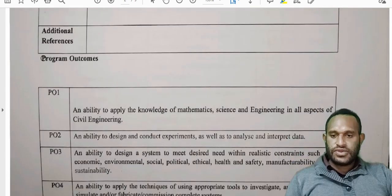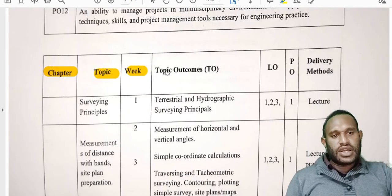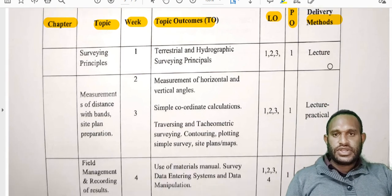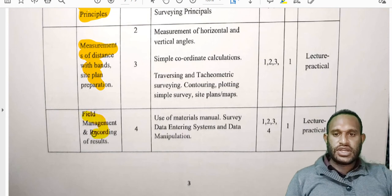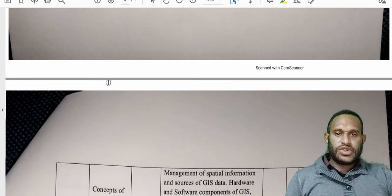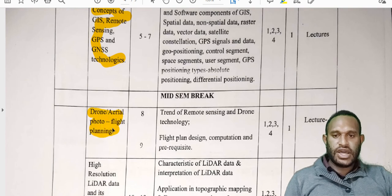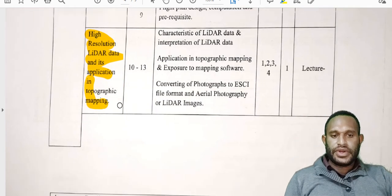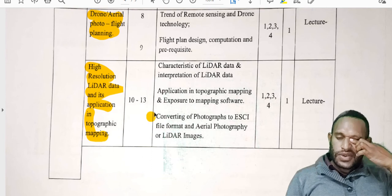The program outcomes you can see through yourself. We have chapter topics, week topics, outcomes, learning outcomes, program outcome achievement, and delivery methods. We will be studying surveying principles. The topics include measurements of distance with bands, site plan and preparations, field magnetic and recording of results, concepts of GIS, remote sensing, GPS and GNSS technologies, drone aerial photo flight planning, image resolution, LiDAR data and its applications in topographic mapping.